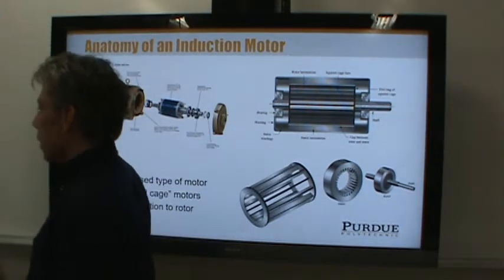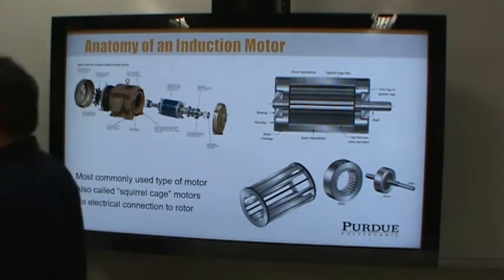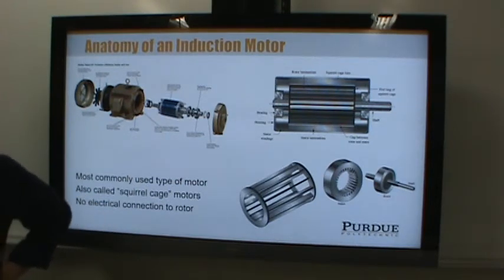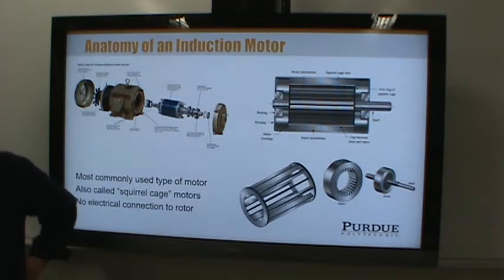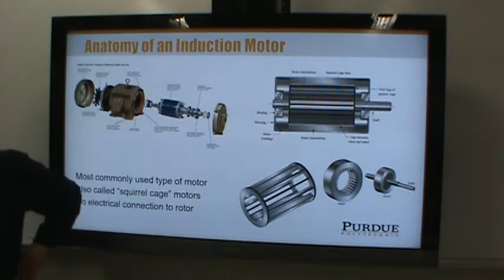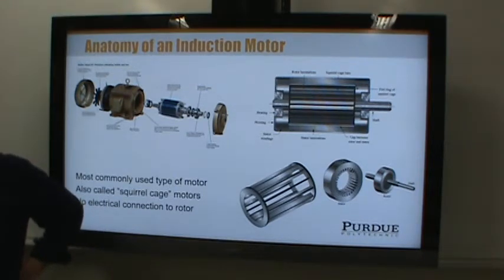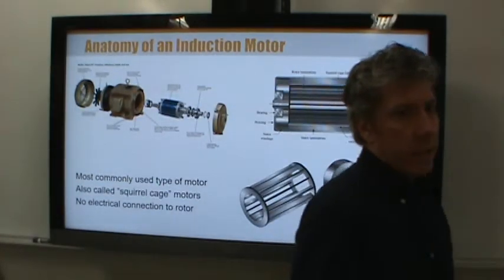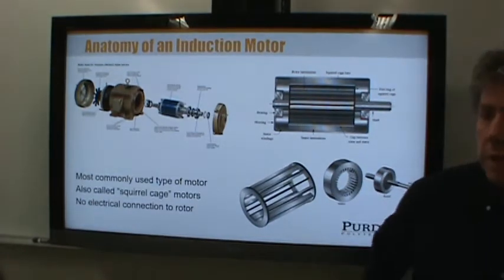We'll continue talking about motors and watch some 'How It Works' and 'How It's Made' videos. Remember last time we talked about the different types of electricity available. We run most motors off of AC because that's what's available, but there are of course DC motors.